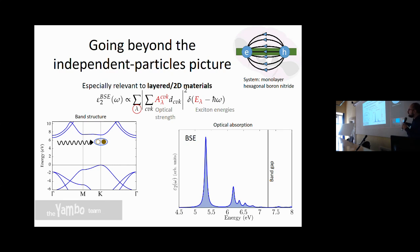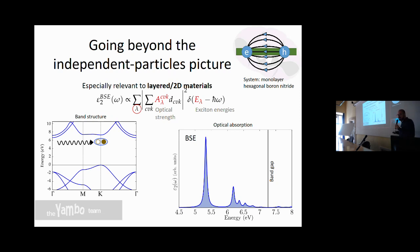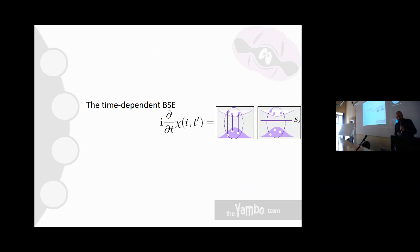When we add electron-electron interaction, the expression changes because it now includes the exciton energies, which shift the poles, and the optical strength becomes a linear combination of all possible transitions. These weights and energies come from the solution of the Bethe-Salpeter equation. The result is super different — you have about a two-electron-volt binding energy of the lowest-lying excitonic peak, so you absolutely cannot approximate the optical properties of this system as independent particles.